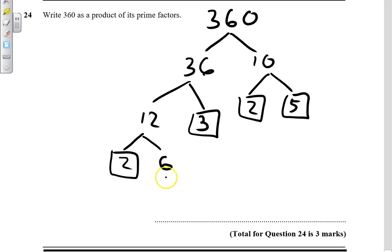6, 2 and 3 and we've got prime numbers at the end of all our branches but it says as a product of its prime factors. So we need to write it out as a multiplication.